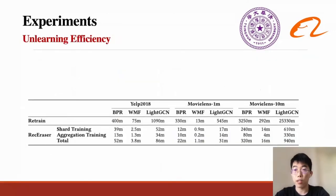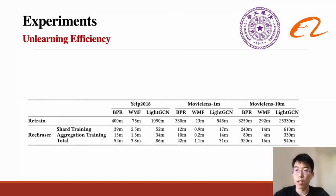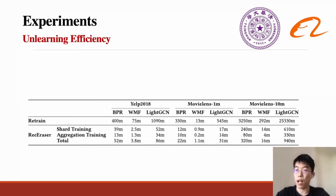We then conducted experiments to explore the unlearning efficiency of RecEraser. Results show that compared to retraining from the whole data, our RecEraser framework can significantly improve unlearning efficiency. For example, on the MovieLens 10 million dataset, the speedup of RecEraser compared to retraining is over 10 times, which is highly valuable in practice. For the retrain method, training on large data is very time-consuming, whereas for RecEraser, only the corresponding submodel and the aggregation part need to be retrained.